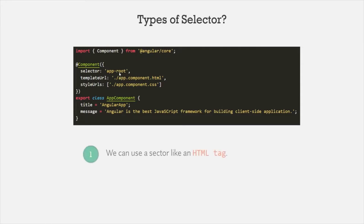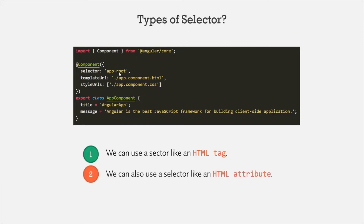So far we have seen that we can use a selector like an HTML tag. But it is also possible to use a selector value like an HTML attribute, and it is also possible to use a selector value like a CSS class. In this lecture let's see how we can use a selector value like an HTML attribute and like a CSS class.